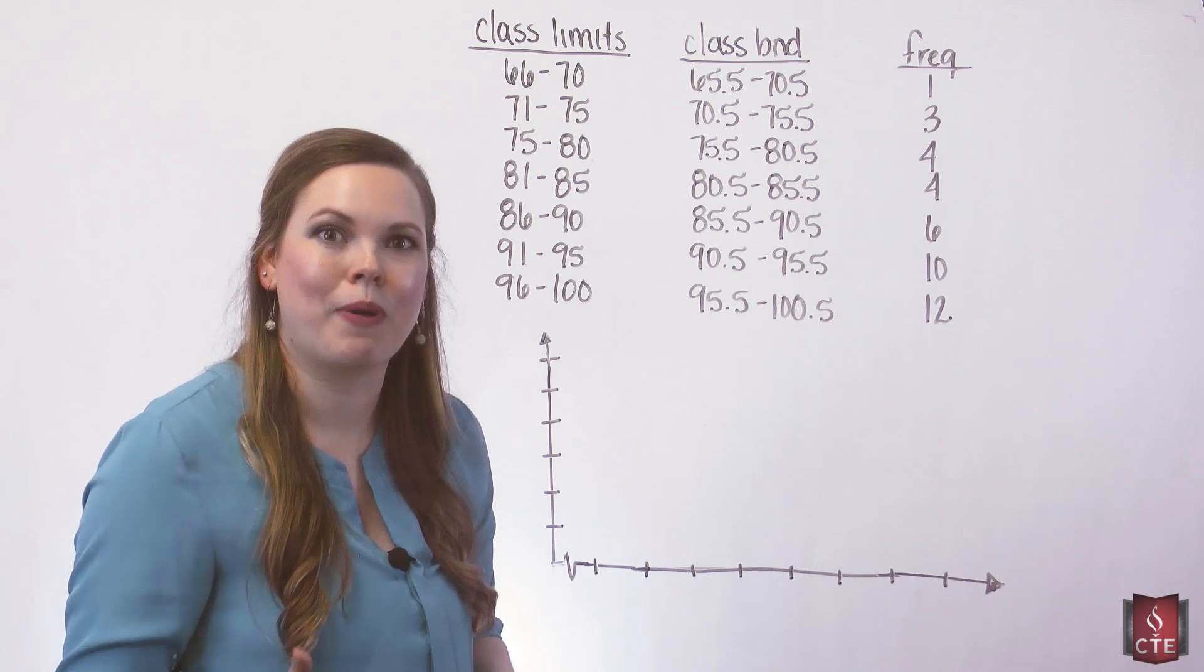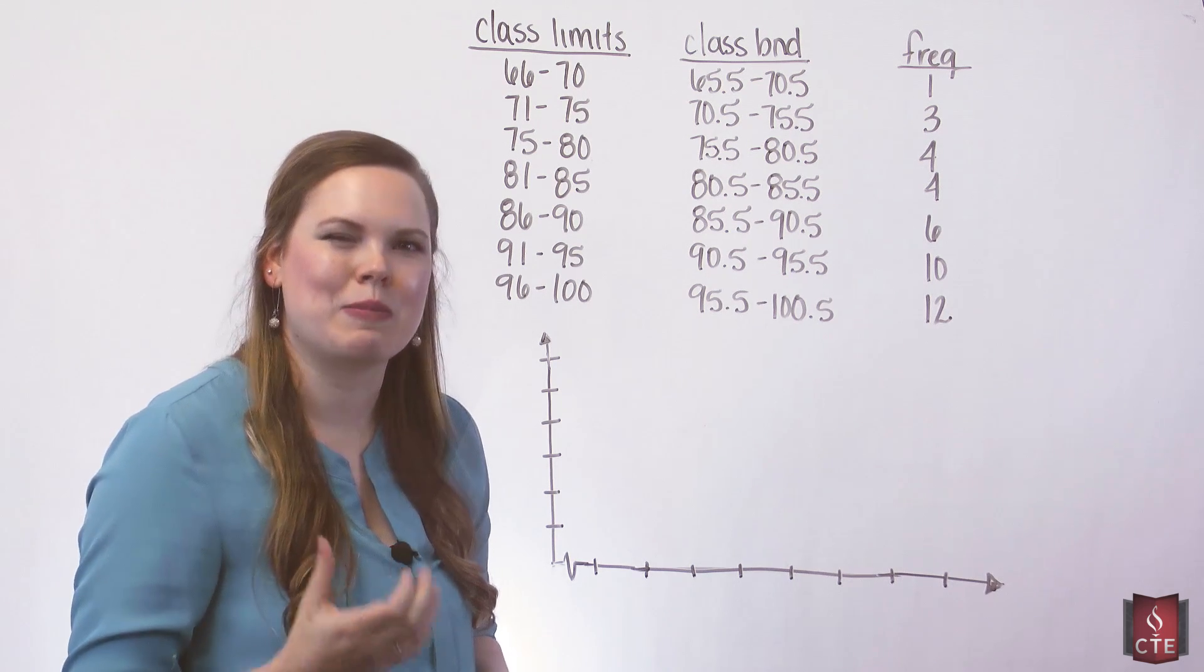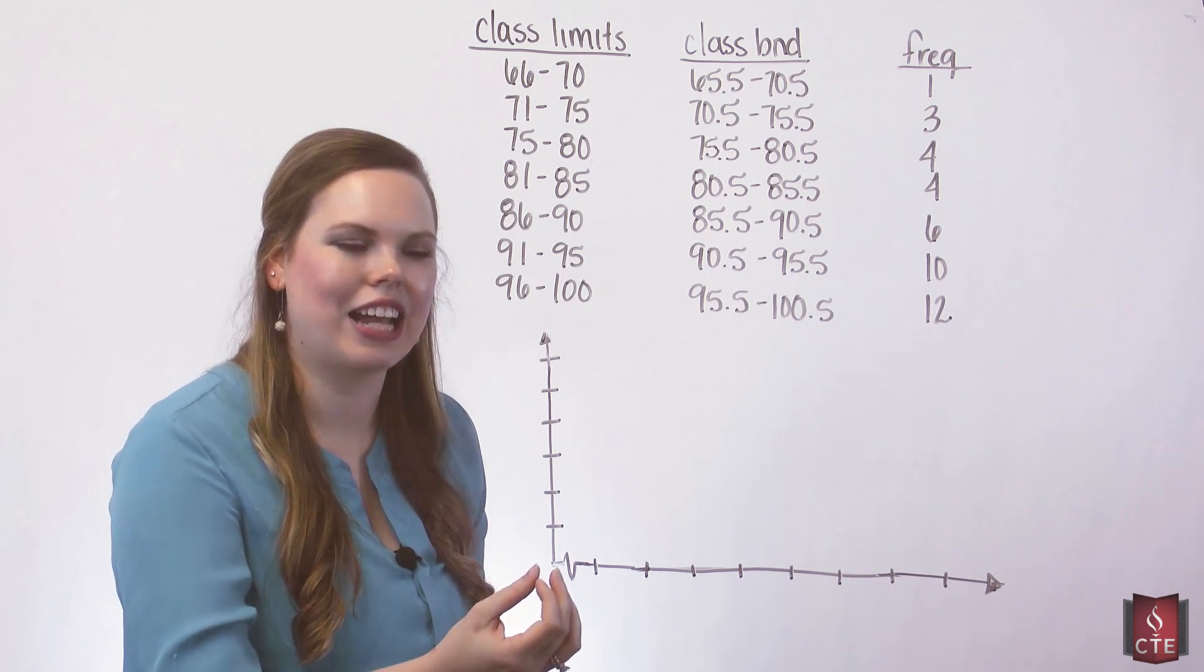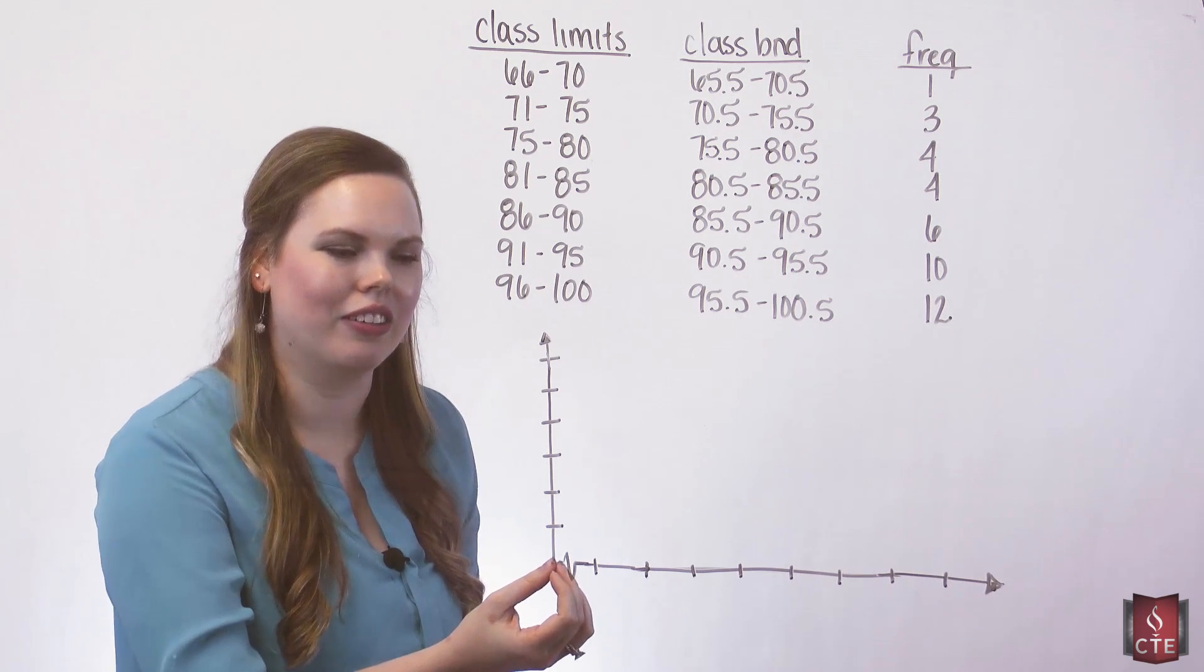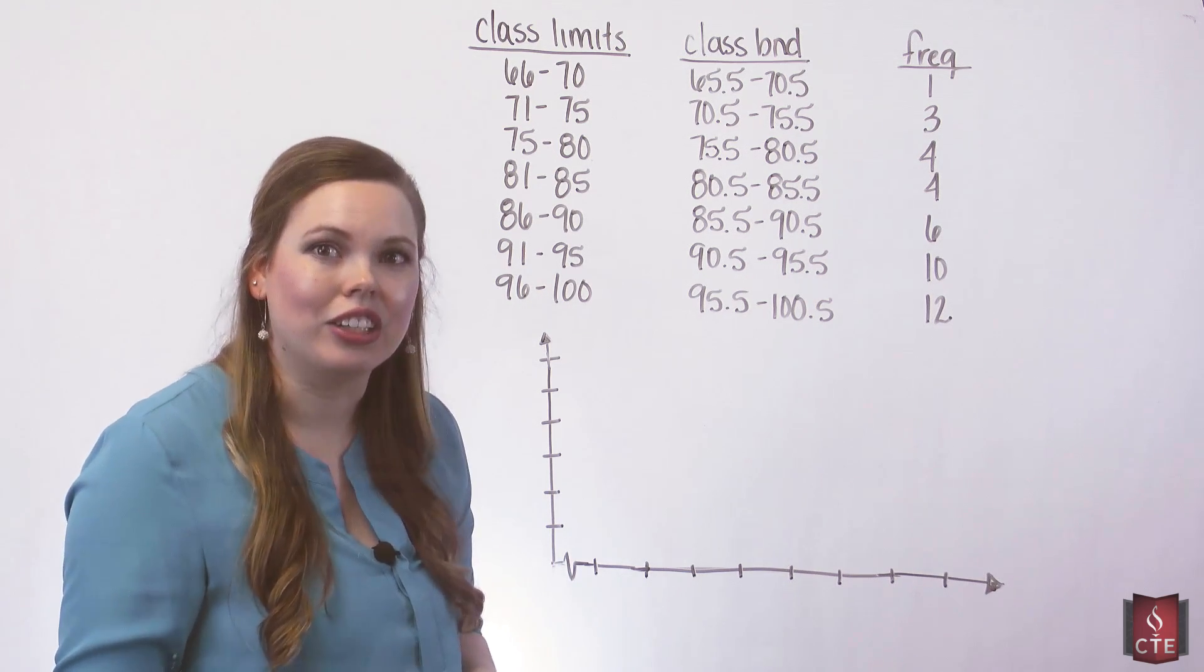A histogram is a bar graph, but it's a special type of bar graph in that it has to have vertical bars, never horizontal, and the bars touch.